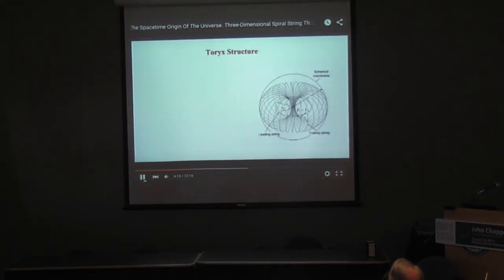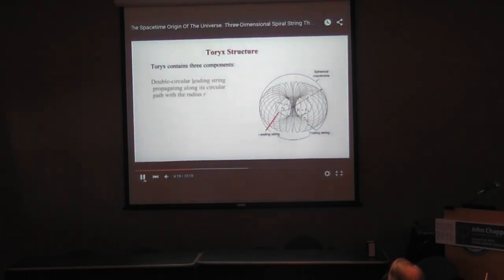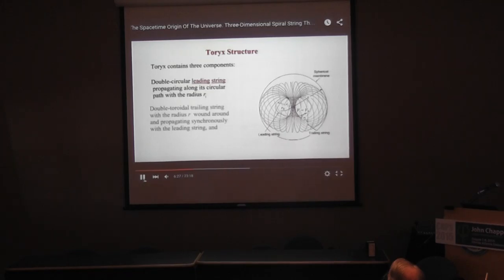The 2X contains three components: a double circular leading string propagating along its circular part with radius R1, and a double trailing string with radius R2 wound around and propagating synchronously with the leading string.